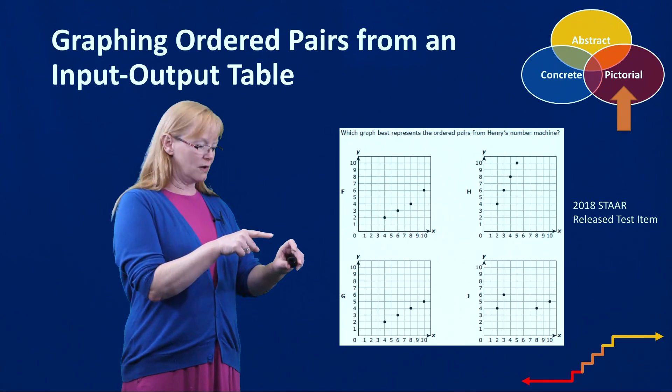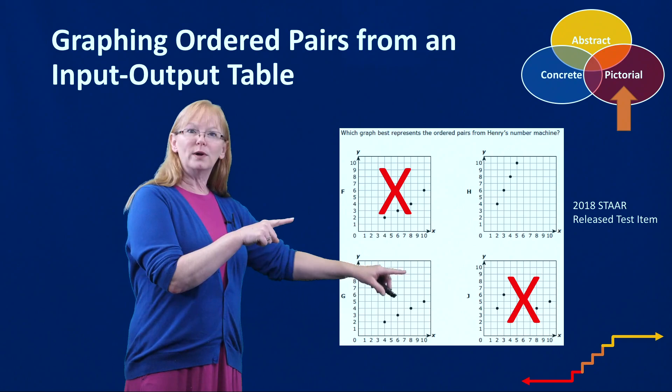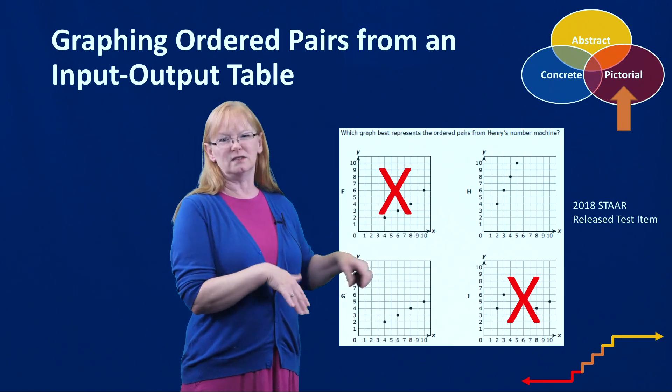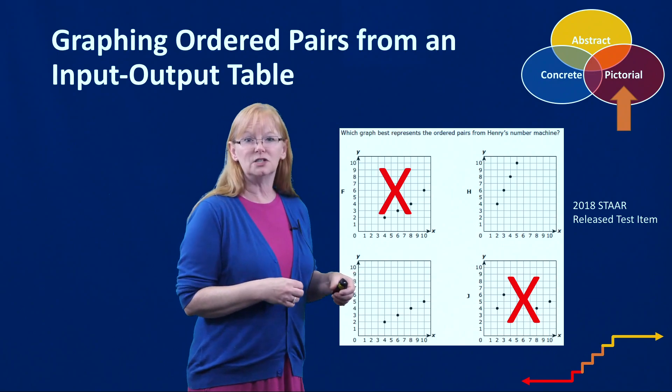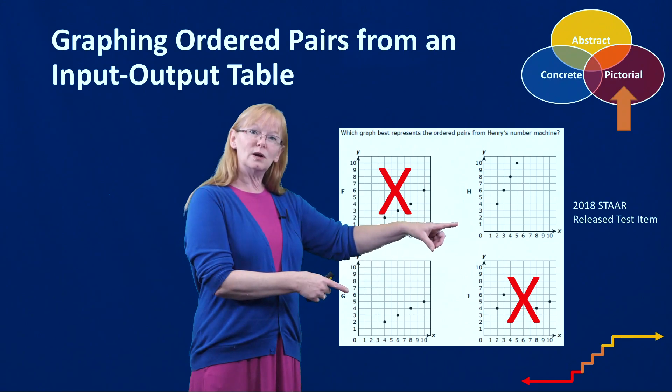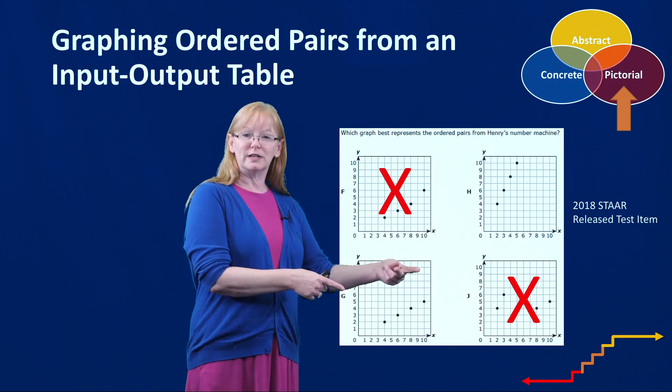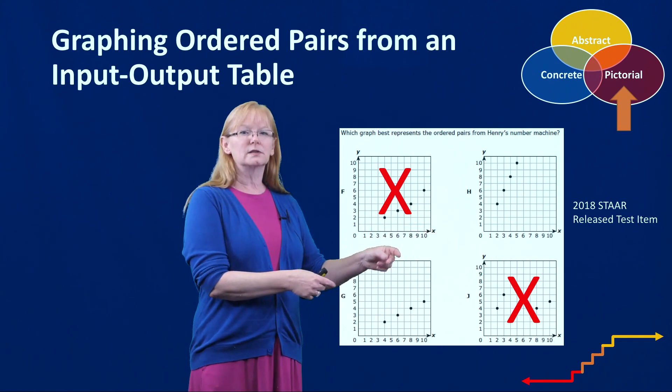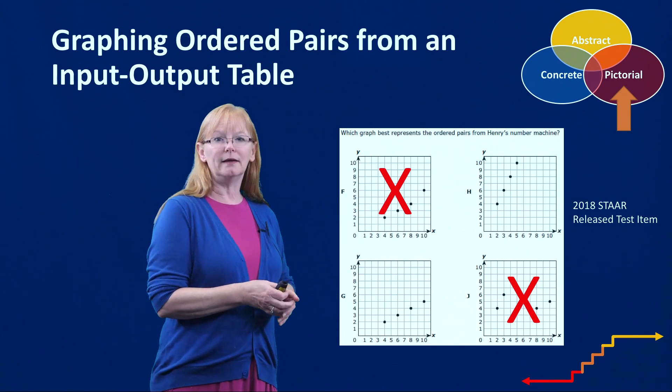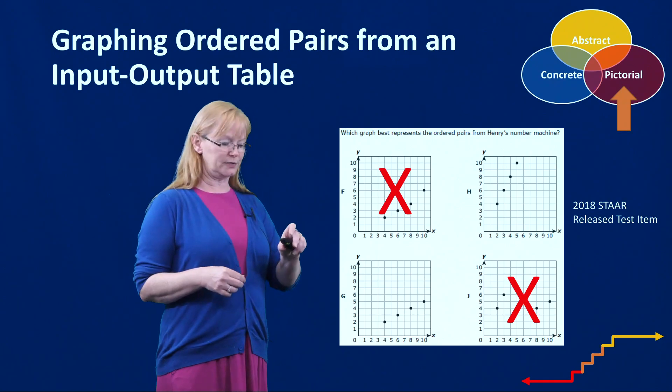Where two of them, the points are not in a line. And so then you've already eliminated 50% of the choices and you've given your kids kind of an advantage in being able to figure out which ones are right. And really the only difference between these two choices is that they've switched the order of the ordered pairs. So really hitting that x comes first and that these points have to be in a line really helps your kiddos.